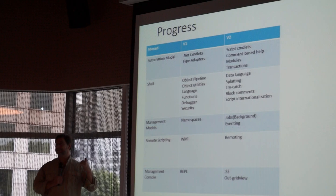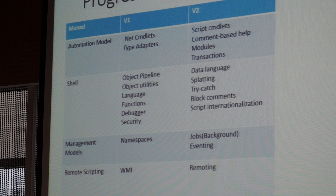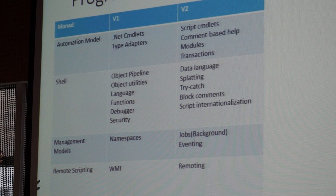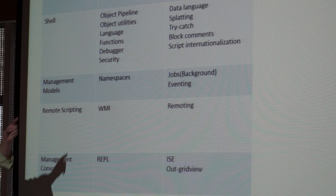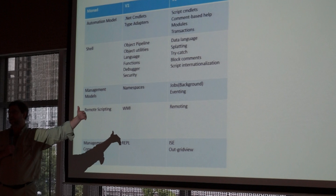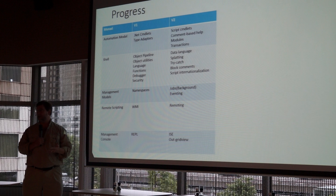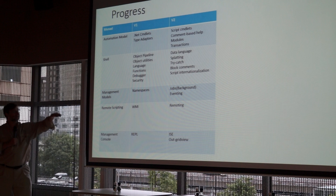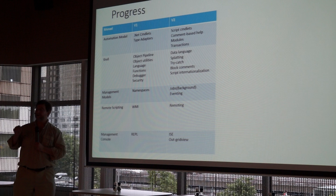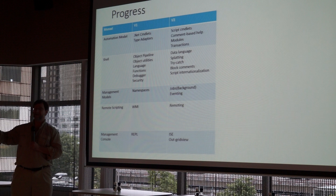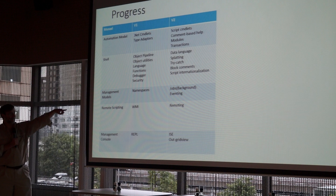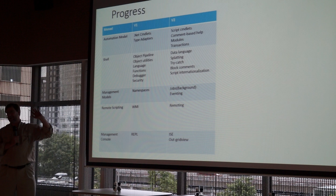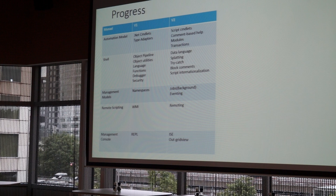Version 2 was a big release. I added script cmdlets — now I could write cmdlets not just in .NET but in PowerShell itself. Huge thing. We had help, modules to take and share things, transactions, data language, splatting. We tried to extend things to be more friendly to developers. We had trap as an error handling mechanism, but we added try-catch to be more developer-friendly. Block comments. Scripted internationalization — Microsoft teams could now ship cmdlets as full first-class citizens. We added jobs — background jobs — and eventing. Version 2 gave us remoting. That was the crucial missing step. Then we added ISE and out-grid-view.